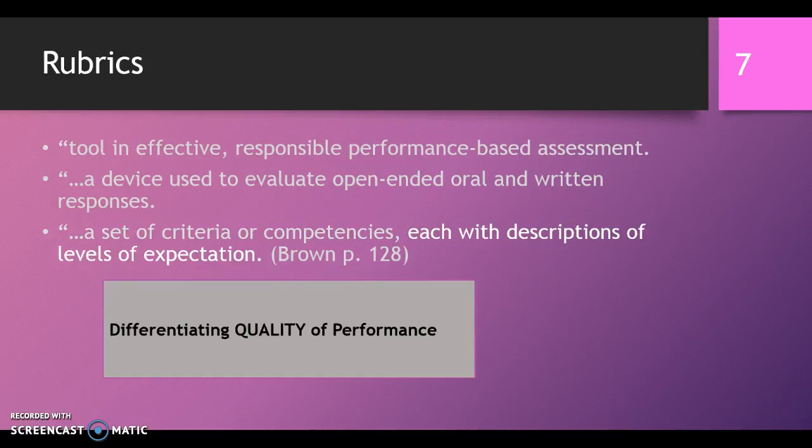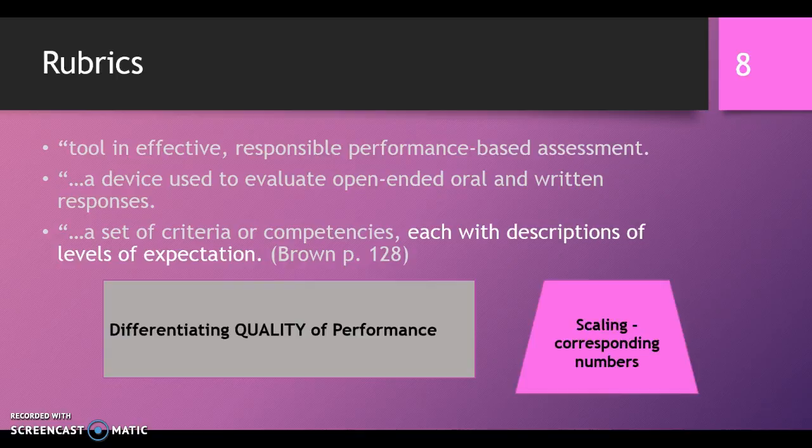Okay, and again, each of these criteria and competencies based on the learning objectives in a rubric, since it's an open-ended performance with variation, we want to somehow differentiate the quality of a performance. And we do that by describing the levels of expectation, different levels of expectation. What do we expect at these different levels? Now, Brown also says that this could include scaling, where we have corresponding numbers for that. But it doesn't have to be. You can just say developing skill, you don't have to put numbers on it for it to be a rubric.